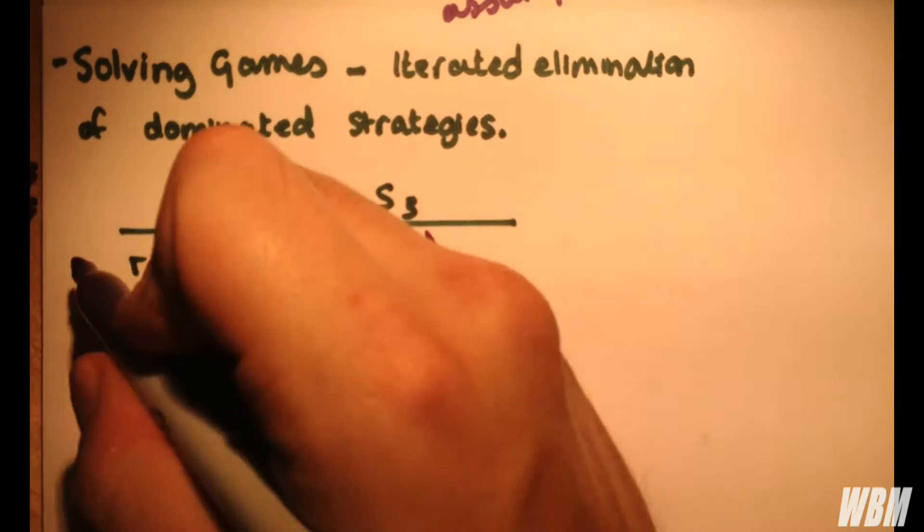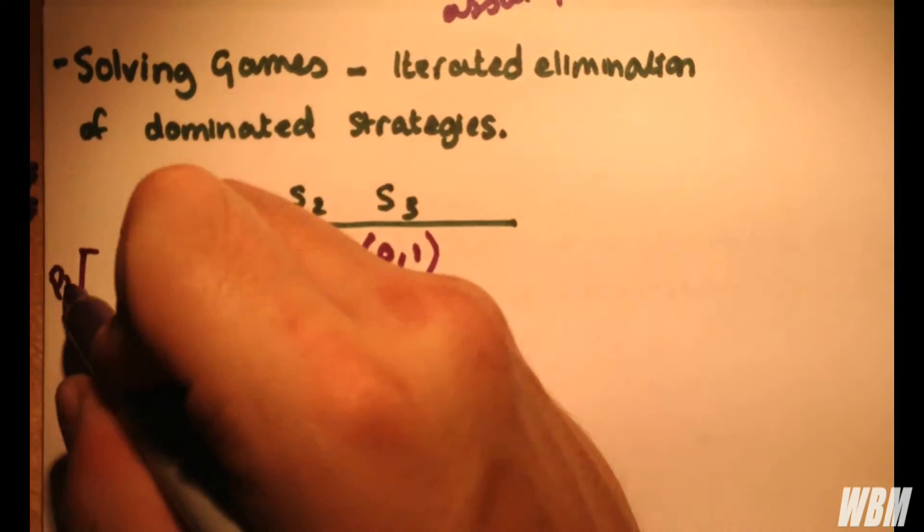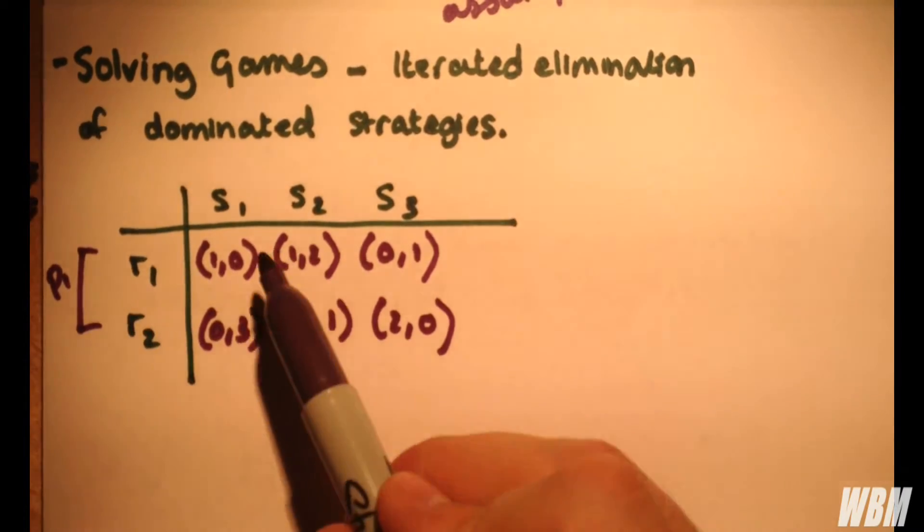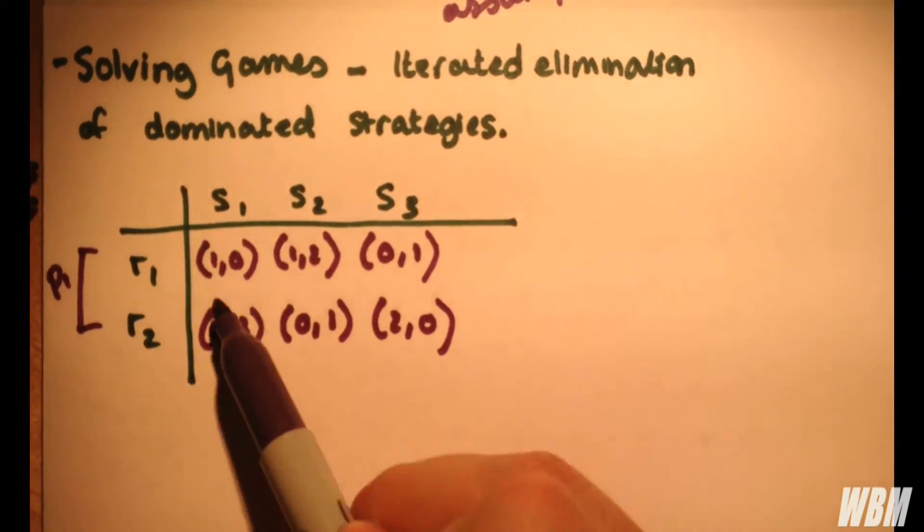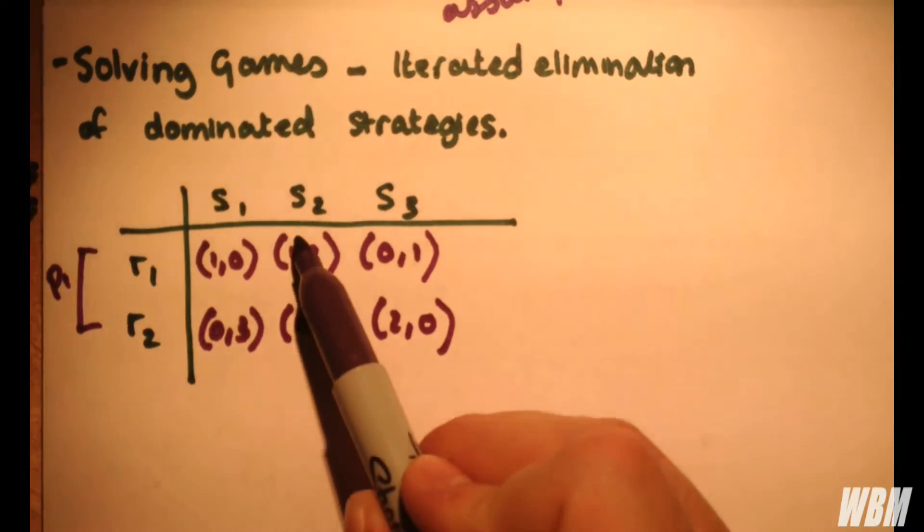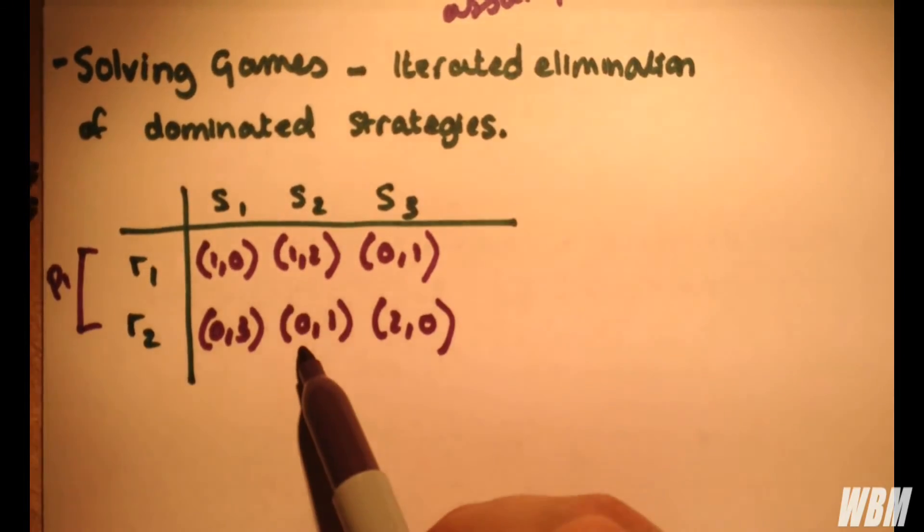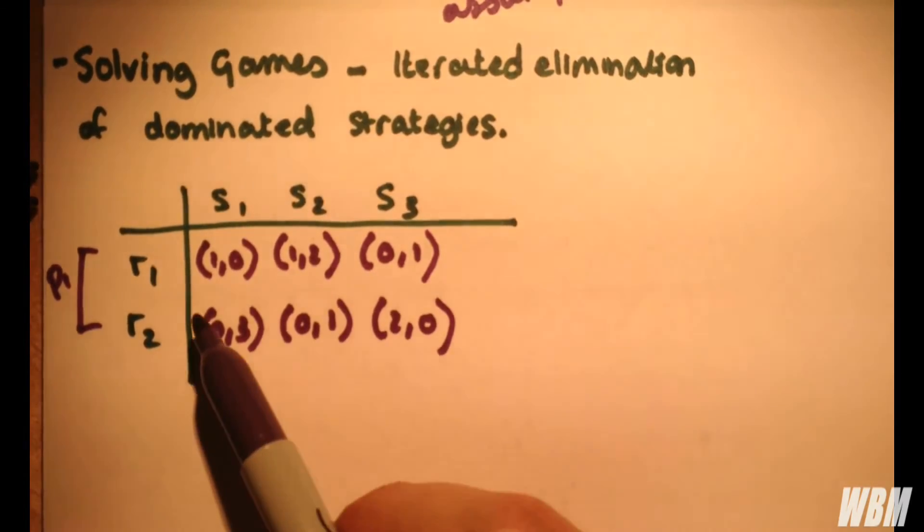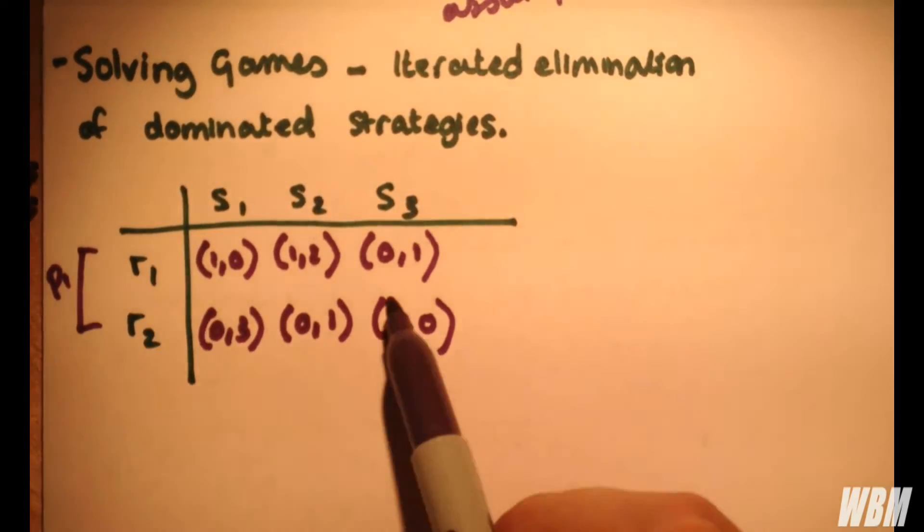I always like to start on player one. So we look at player one, and we look at strategy R1. So for S1, 1 is greater than 0. For S2, 1 is greater than 0. And for S3, 0 is less than 2. So between R1 and R2, there are no dominated strategies.